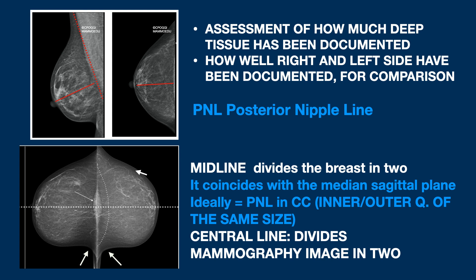What's important is the midline, which coincides with the PNL and the median sagittal plane and indicates that the inner and the outer quadrants are of the same size.